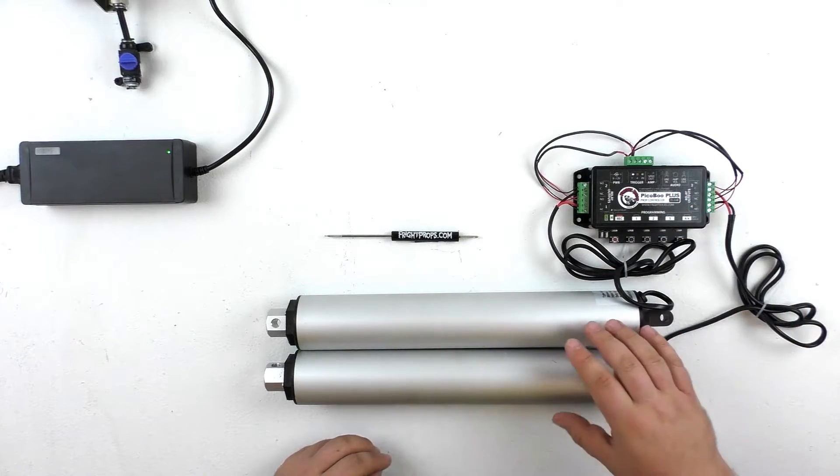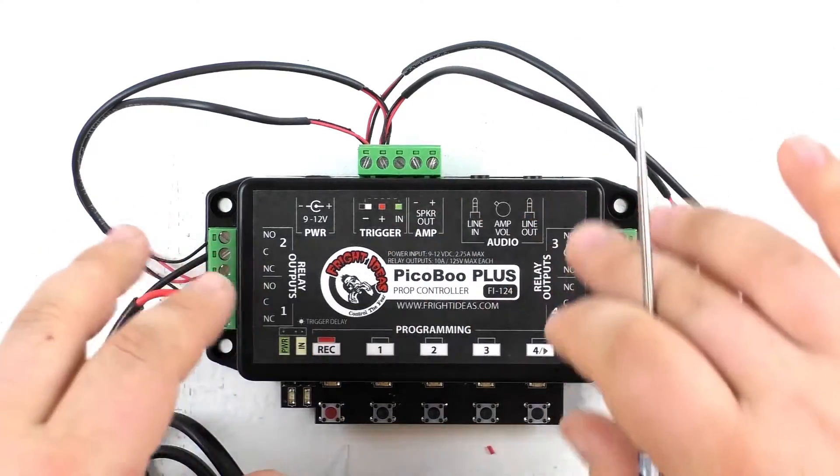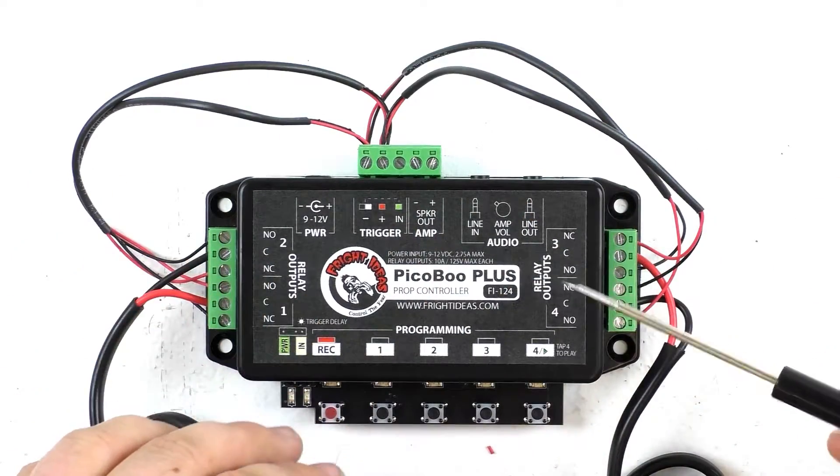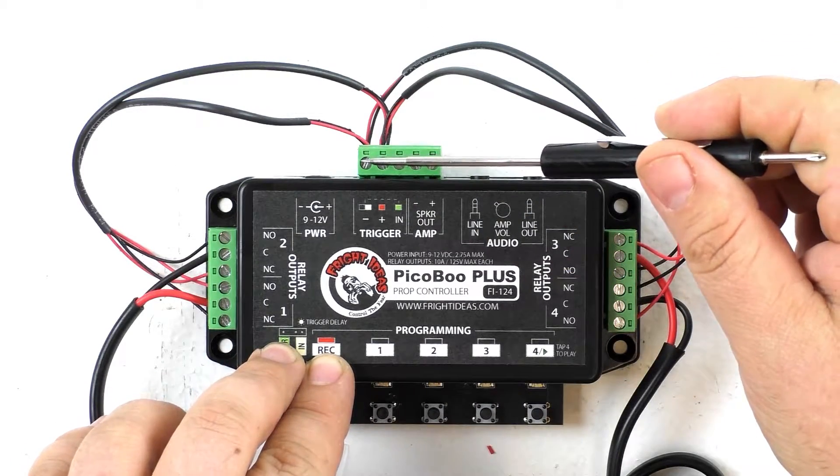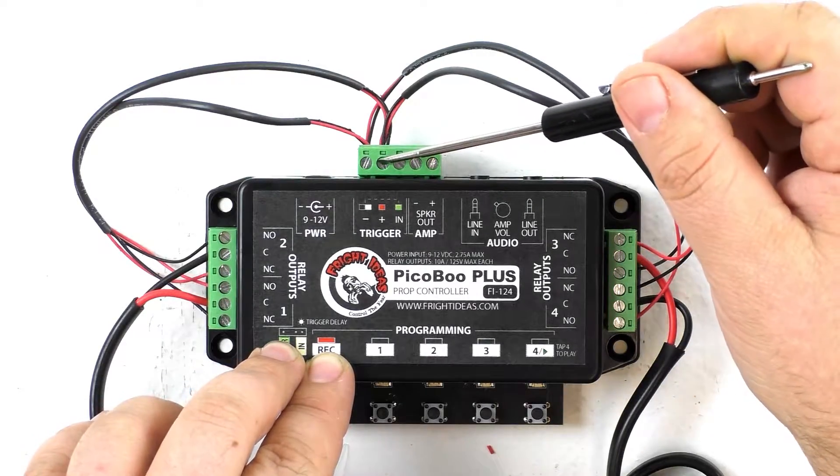First off let's go ahead and take a closer look at how this is all wired up. As you can see here we have quite a few wires kind of jumping around the Peekaboo Plus here but it's actually pretty straightforward. What I've done is I've taken four wires and put them into the negative of the trigger. I've taken another four wires and put them into the positive.